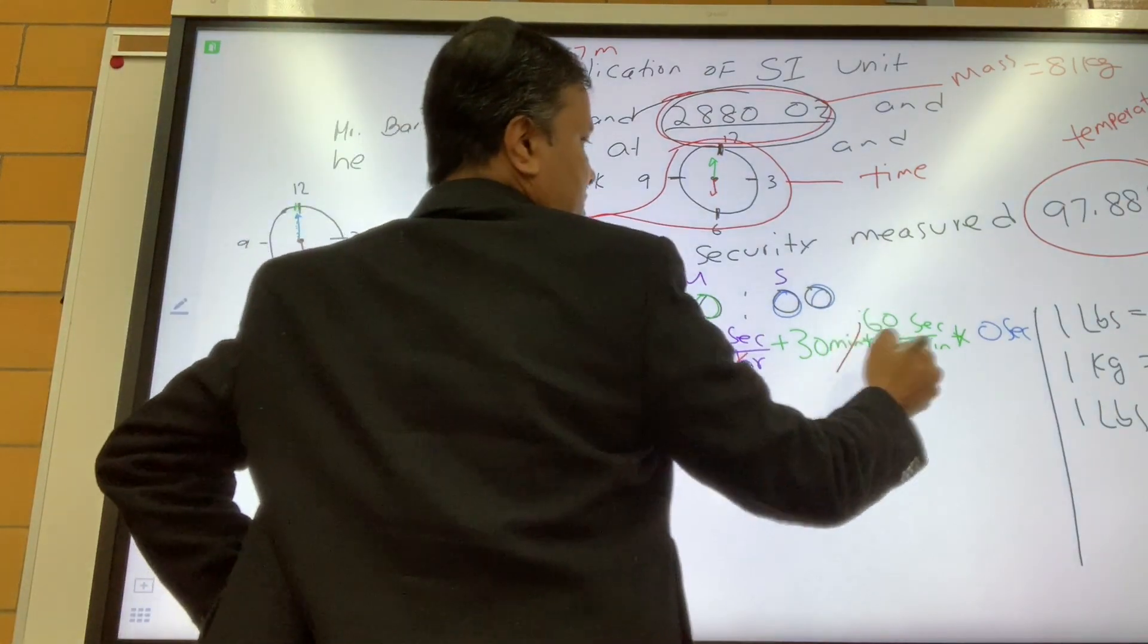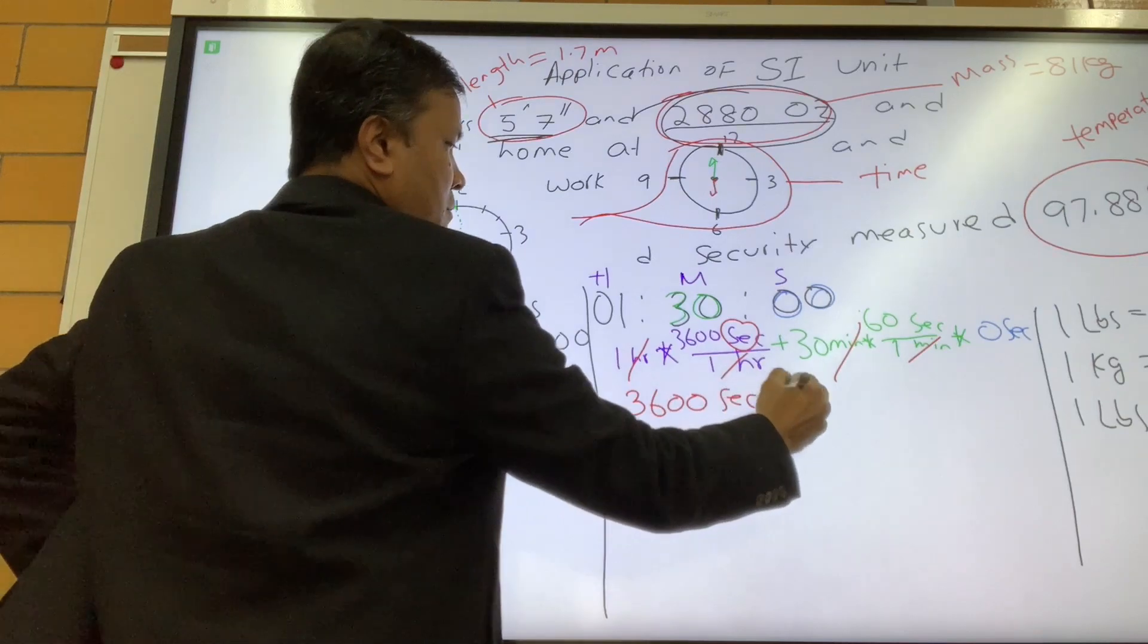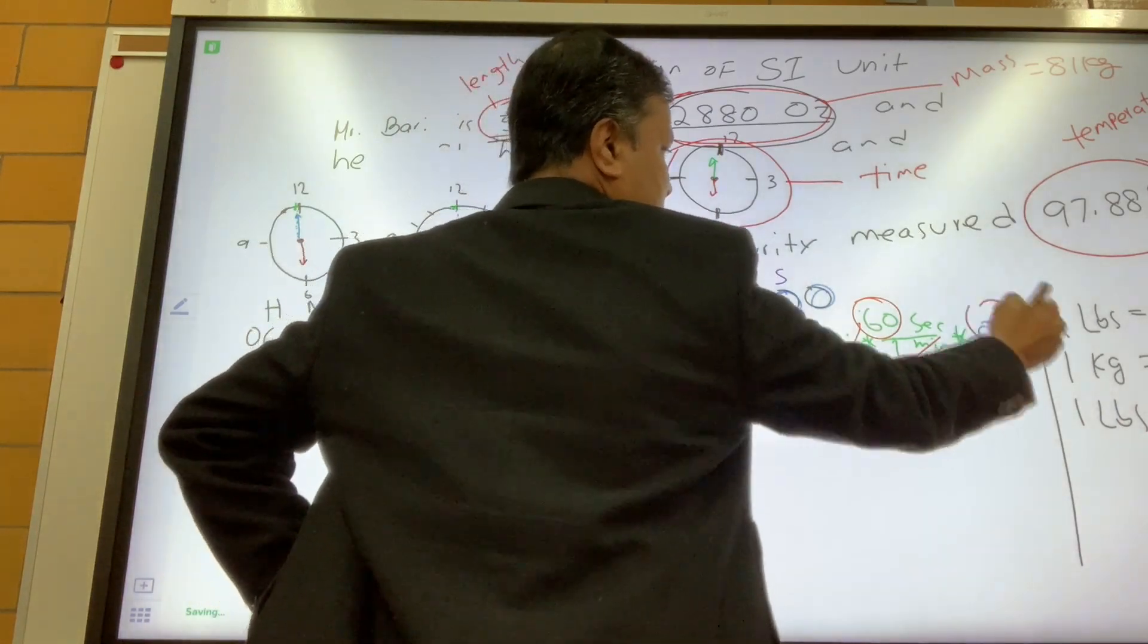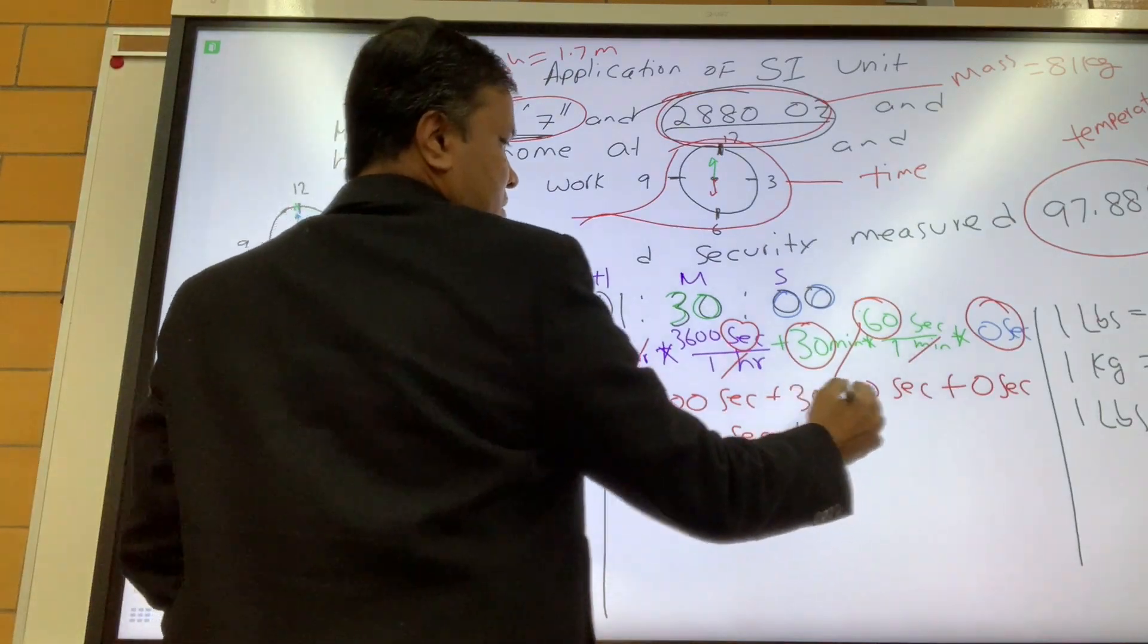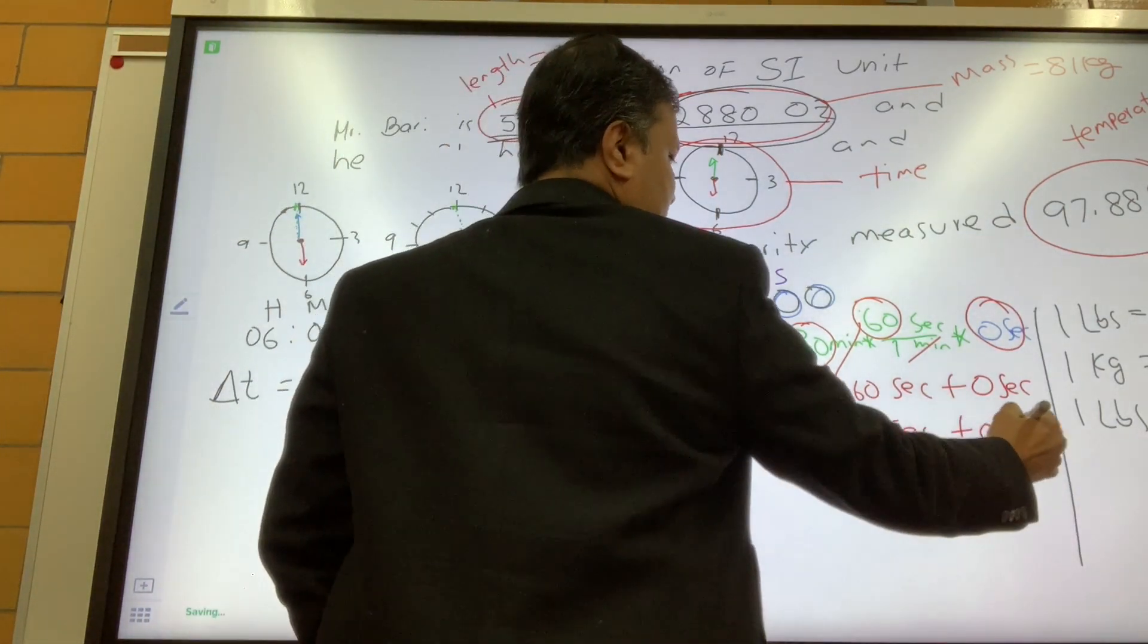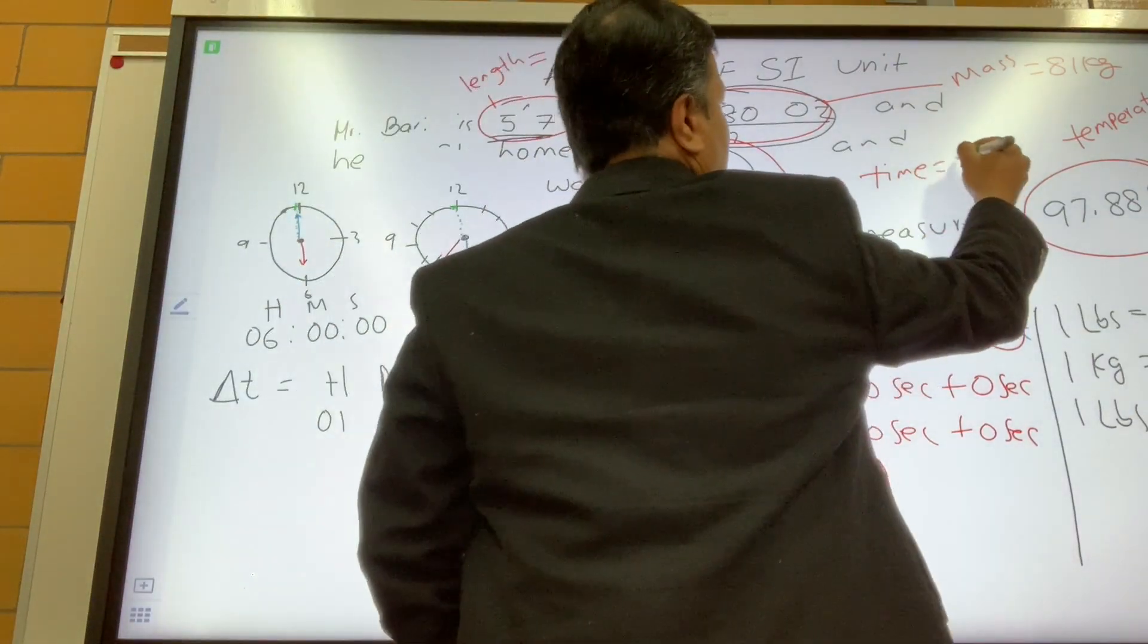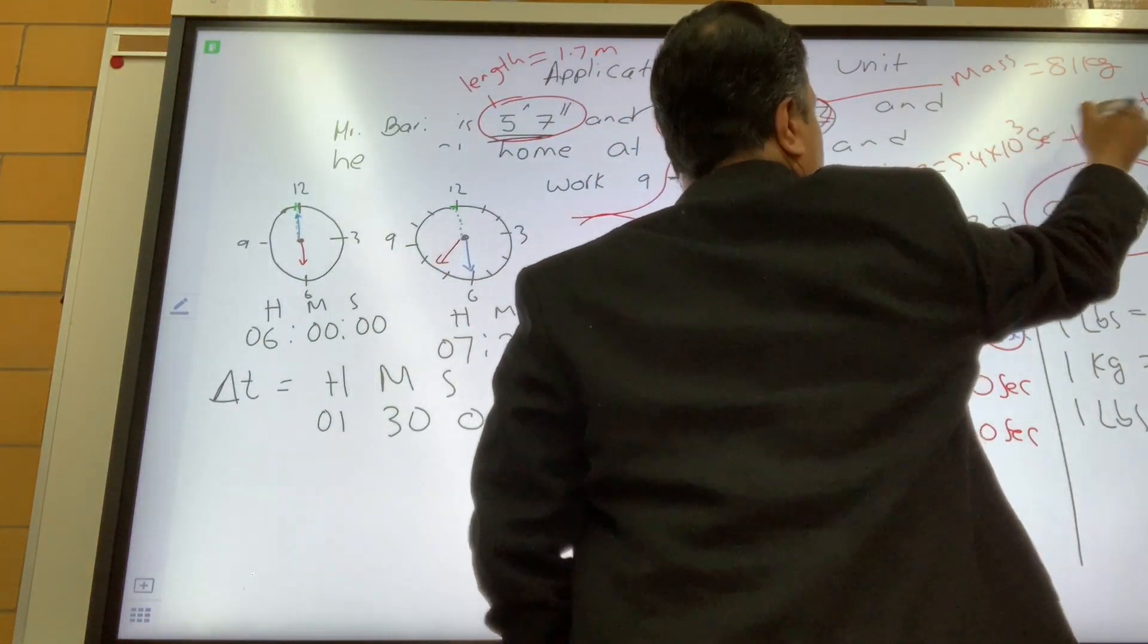So now what are you gonna do? Hour cancel, minute cancel. 3,600 second plus 1,800 second, so 5,400 second. So altogether we're gonna have 5,400 second, and 5,400 second is 5.4 times 10 raised to 3 second.